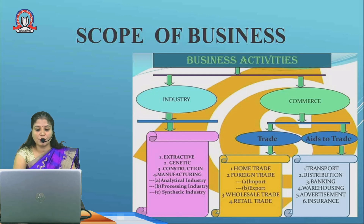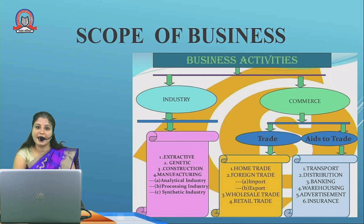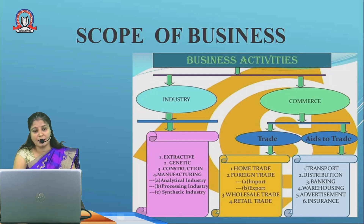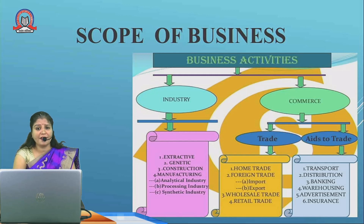Trade refers to buying and selling of goods and services. It consists of two parts: internal trade and external trade. Internal trade means buying and selling of goods and services within the political boundary of the country, whereas external trade means buying and selling of goods outside the political boundary. Aid to trade refers to various services required for buying and selling of goods, without which trading cannot happen.